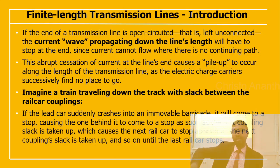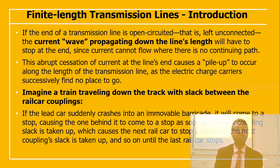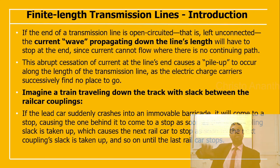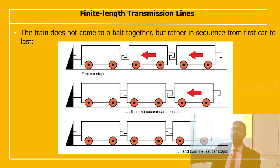Imagine a train traveling down a track with slack between the rail car couplings. If the lead car crashes into an immobile barricade, it stops, then the car behind it stops as the first coupling slack is taken up, then the next, and so on. The train does not stop all at once but rather in sequence from the first car to the last.